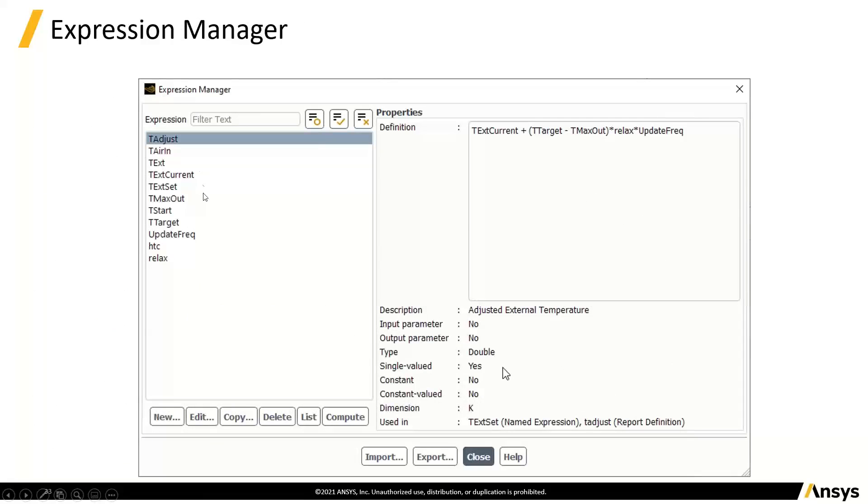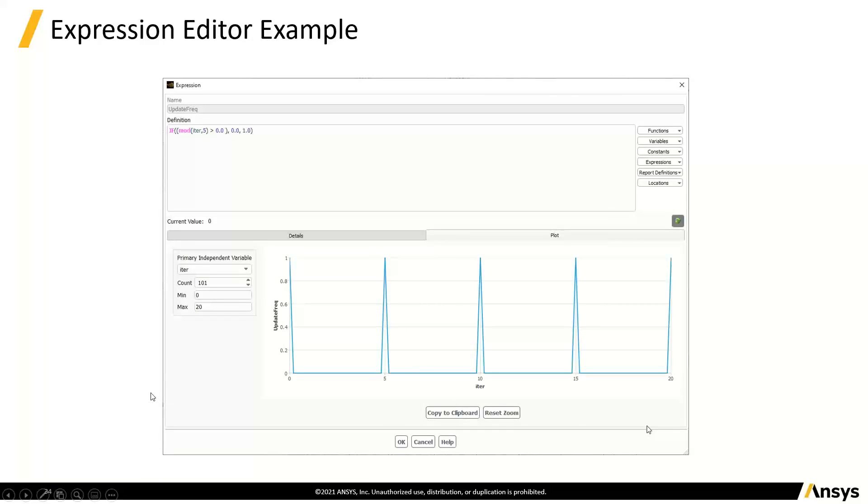So we've got all our variables in here. We can go through the expression manager, checking them and setting them up. We can test, for example, that we've set this up right. So we want to make something non-zero every fifth. It's also going to have one there. So 5, 10, 15, 20, etc. So we've got our logic right.